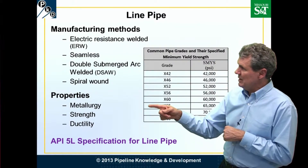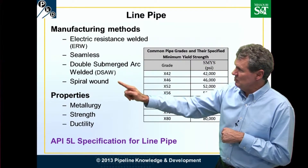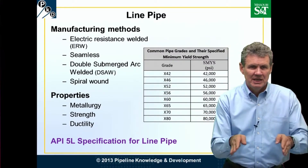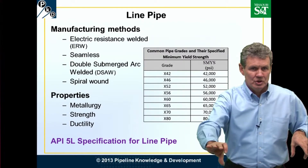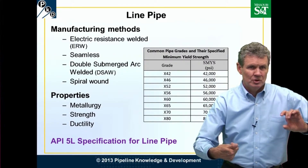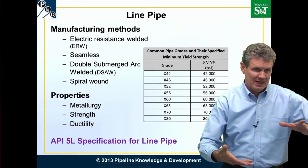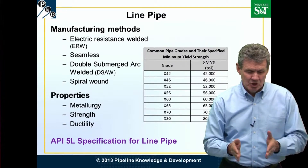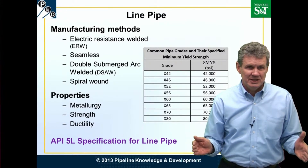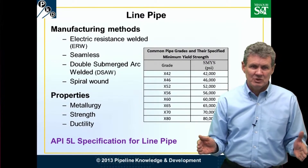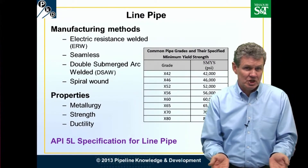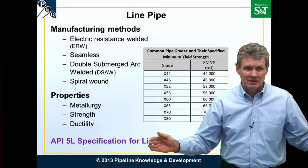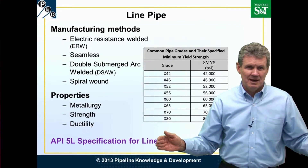We also have spiral wound pipe. Spiral wound pipe has to be welded up, but rather than taking a flat piece of steel and folding it into a long tube, we twist the steel up like a toilet paper roll. One big advantage of spiral wound pipe is that we don't need as wide a piece of steel. If we're folding up 48-inch pipe, we need the parent metal to be 48 times pi wide.